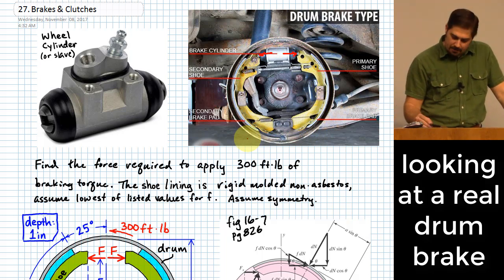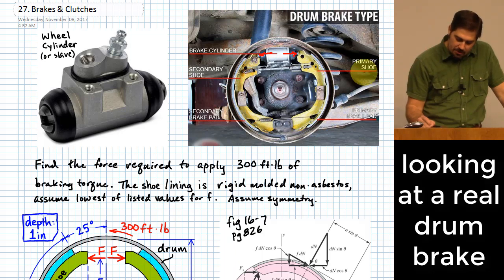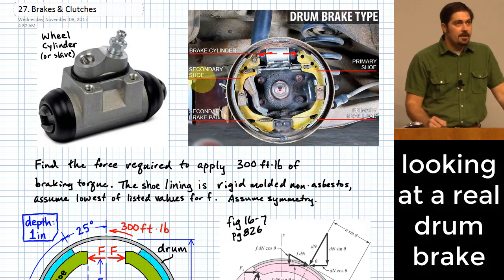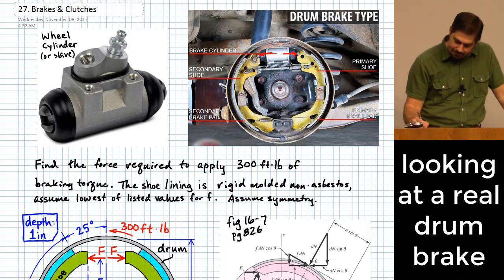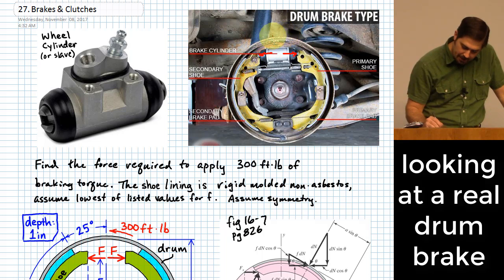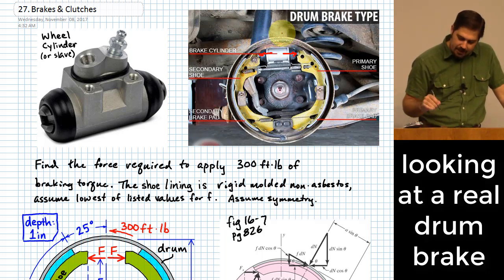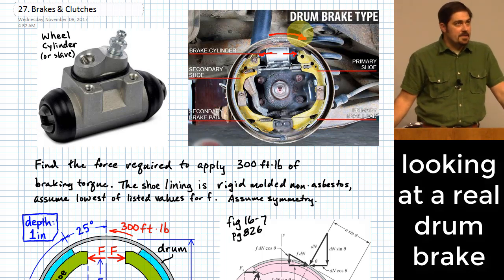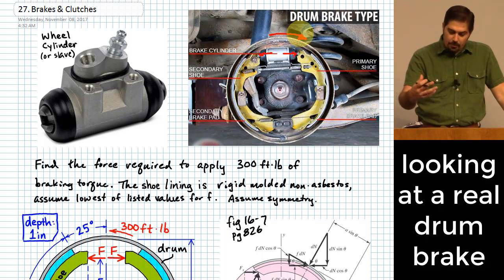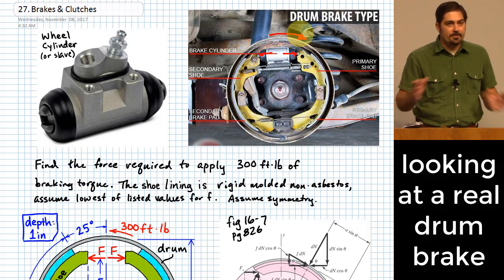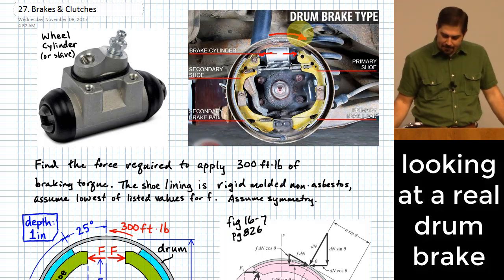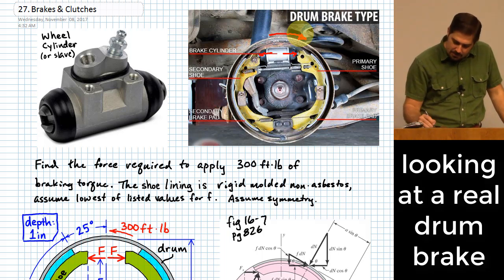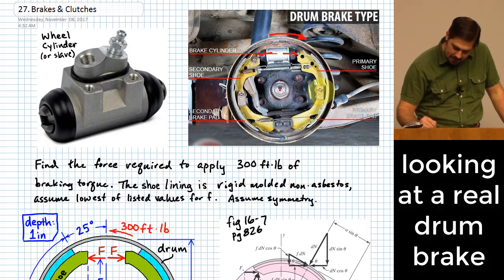I found this picture online — you might notice the one labeled a primary shoe and there's one labeled a secondary shoe. The reason for that is there is a particular direction that this drum is turning. You're looking from the side of the vehicle at a rear wheel here, and this rear wheel is made to turn in that direction. As it's turning that direction, you might want to stop the vehicle by applying friction to the inside surface of the drum. You might see that the tendency of the drum turning this way will also try to make this shoe go that way.